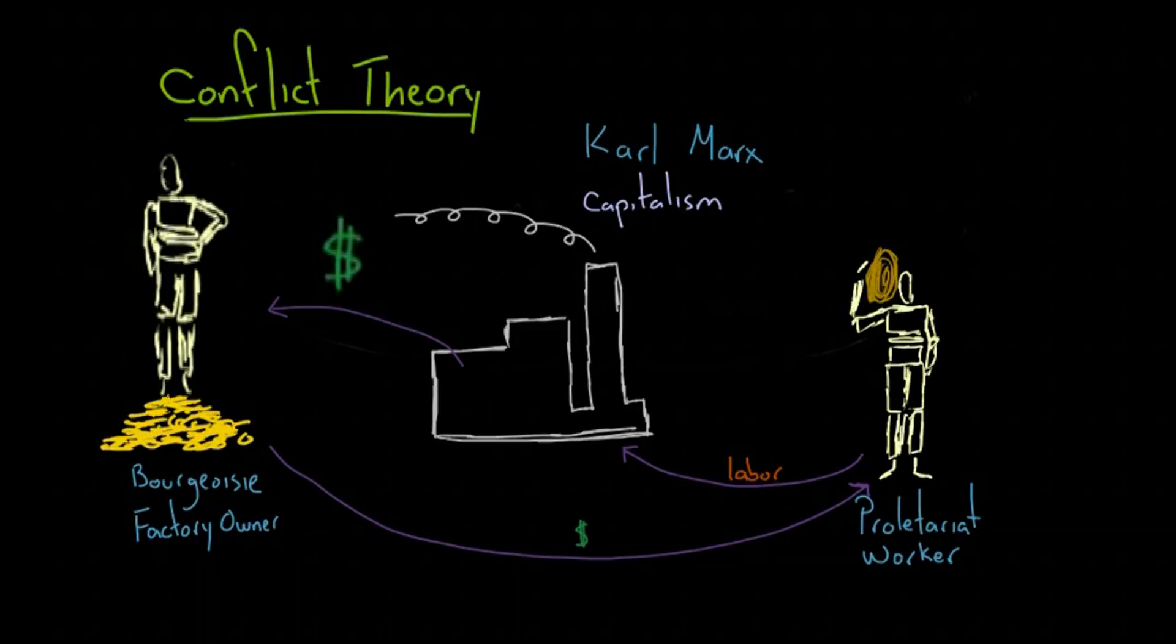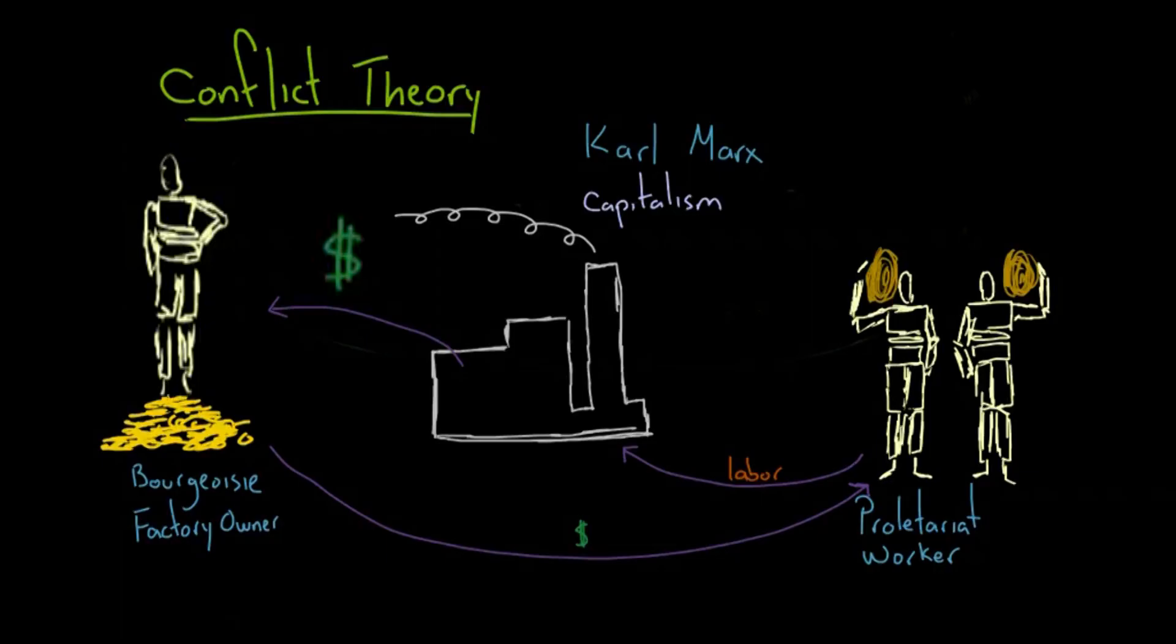As the working class realized they were being exploited, they would unite to create a class consciousness. This class consciousness is kind of like getting everyone on the same wavelength so they can be stronger and overthrow the capitalist status quo.